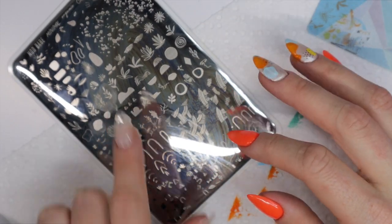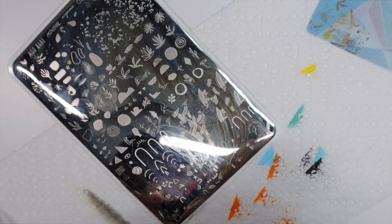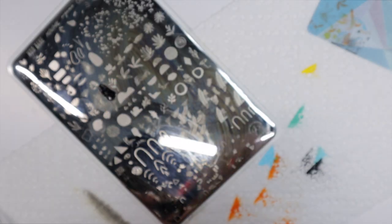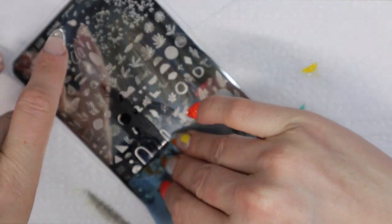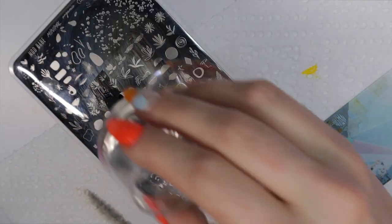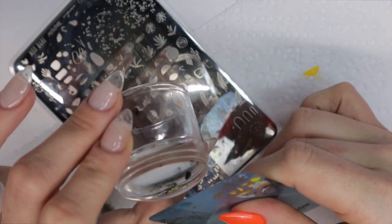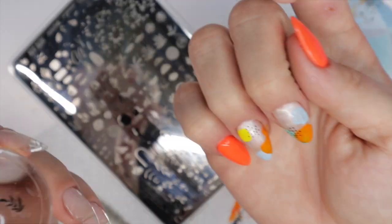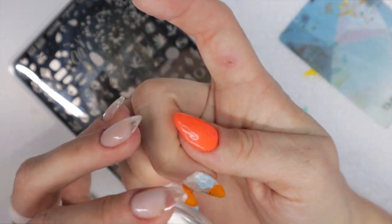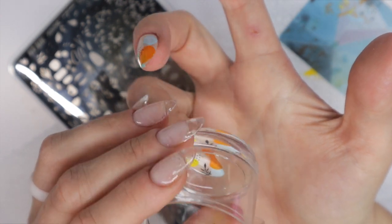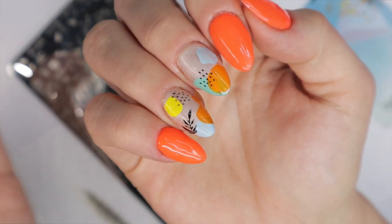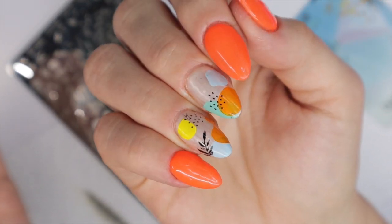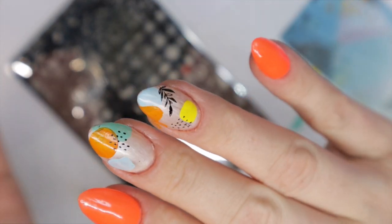The stamping plate is perfect—it has so many different leaf designs. So depending on your mood or the vibe that you're going for, you can get any design you really want. I'm going to go with two different designs that are right next to each other. They're pretty similar but different at the same time, so I'm just going to stamp these on one of my nails and then do the other design on the other nail.